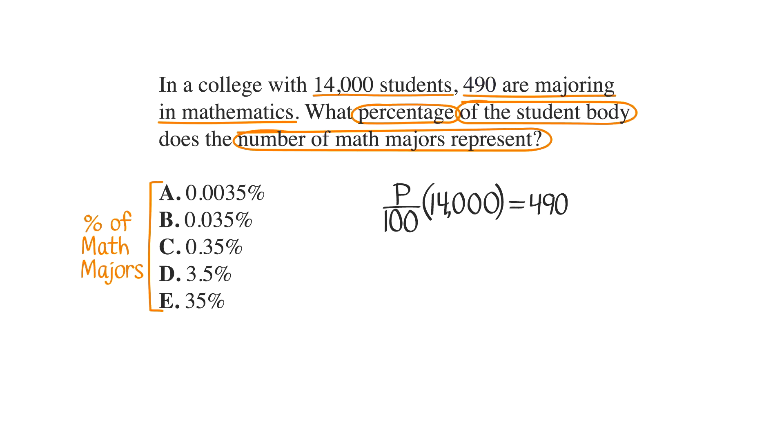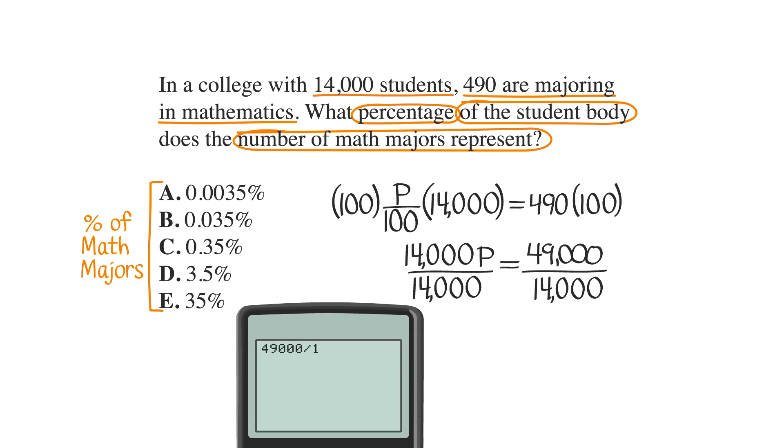We'll multiply both sides by 100 to get 14,000 P equals 49,000. Now divide both sides by 14,000. You can enter this in your calculator to get 3.5. So P equals 3.5%.